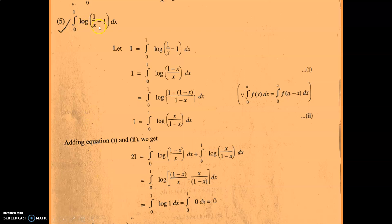Next question is integral 0 to 1 of log(1/x minus 1) dx. Let i equal to integral 0 to 1 of log(1/x minus 1) dx. Taking LCM we get log((1 minus x) upon x) dx. Again applying the property integral 0 to a f(x) dx equals integral 0 to a f(a minus x) dx, this becomes integral 0 to 1 of log((1 minus (1 minus x)) upon (1 minus x)) dx. After simplification, 1 minus 1 cancels, giving log(x upon (1 minus x)) dx. This is equation 1 and equation 2.